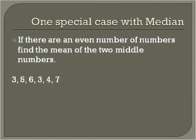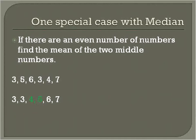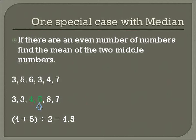There is a special case with the median. Sometimes, like in this case, you have six numbers — an even number of numbers. So to find the middle number, we first list them in order, highlight the middle two numbers, and then find the mean — the average — of those two numbers. We add them together and divide by two. So four plus five is nine; nine divided by two is 4.5, which makes sense — the average of four and five is four and a half, right in the middle. That gives us the median.